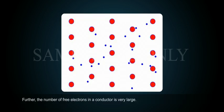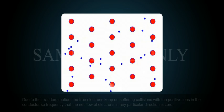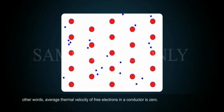Further, the number of free electrons in a conductor is very large. Due to their random motion, the free electrons keep on suffering collisions with the positive ions in the conductor so frequently that the net flow of electrons in any particular direction is zero. In other words, average thermal velocity of free electrons in a conductor is zero.